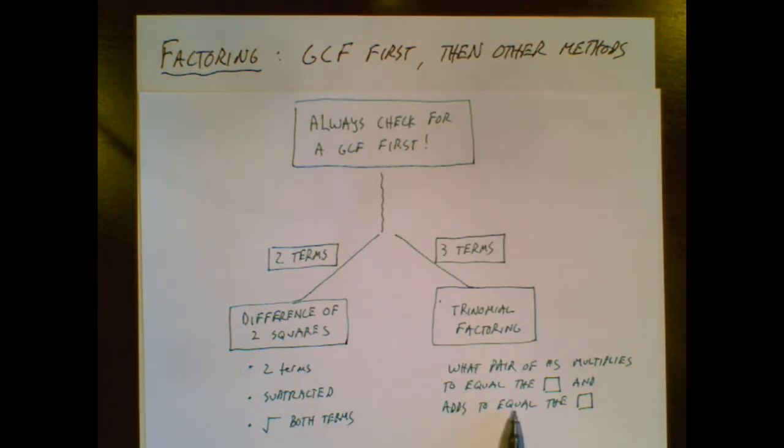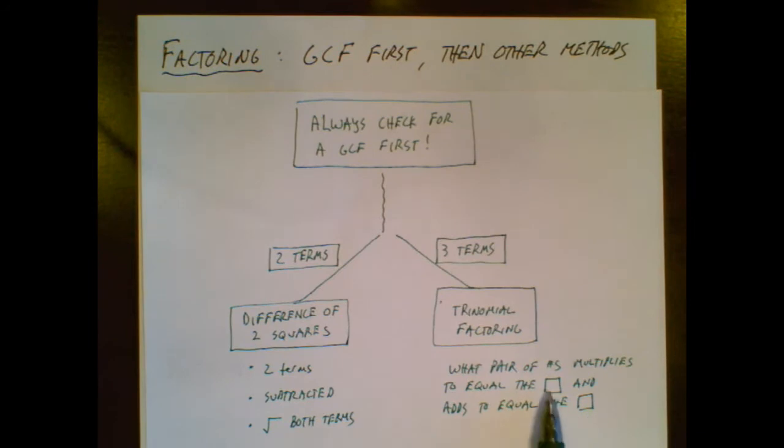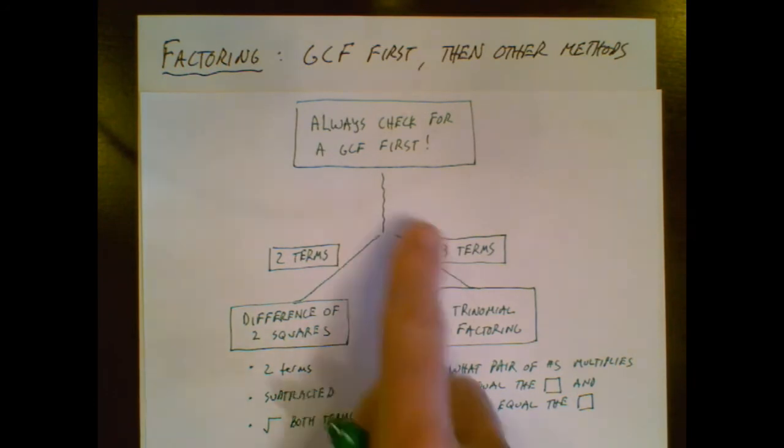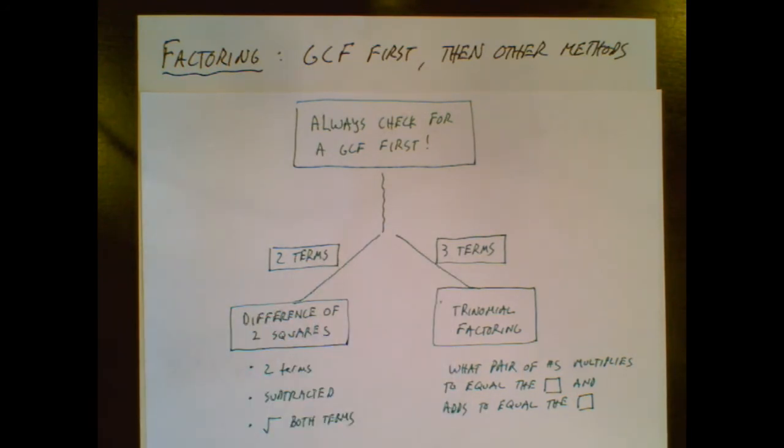Or the trinomial factoring said, hey, figure out what pair of numbers multiplies to equal the constant term. And at the same time, those two numbers add to equal the middle coefficient. And if you could find that pair of numbers, then you use that golden pair of numbers to follow the pattern of trinomial factoring. We're going to use this flowchart as we go through these examples.